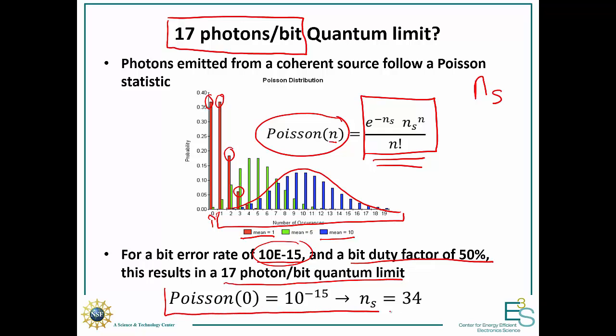And it's summarized right here. 34 photons for a one, so that's only 17 photons on average. Well, the Poisson distribution of seeing zero photons, the Poisson probability of seeing zero photons is 10 to the minus 15. So, that's how we get to the quantum limit.